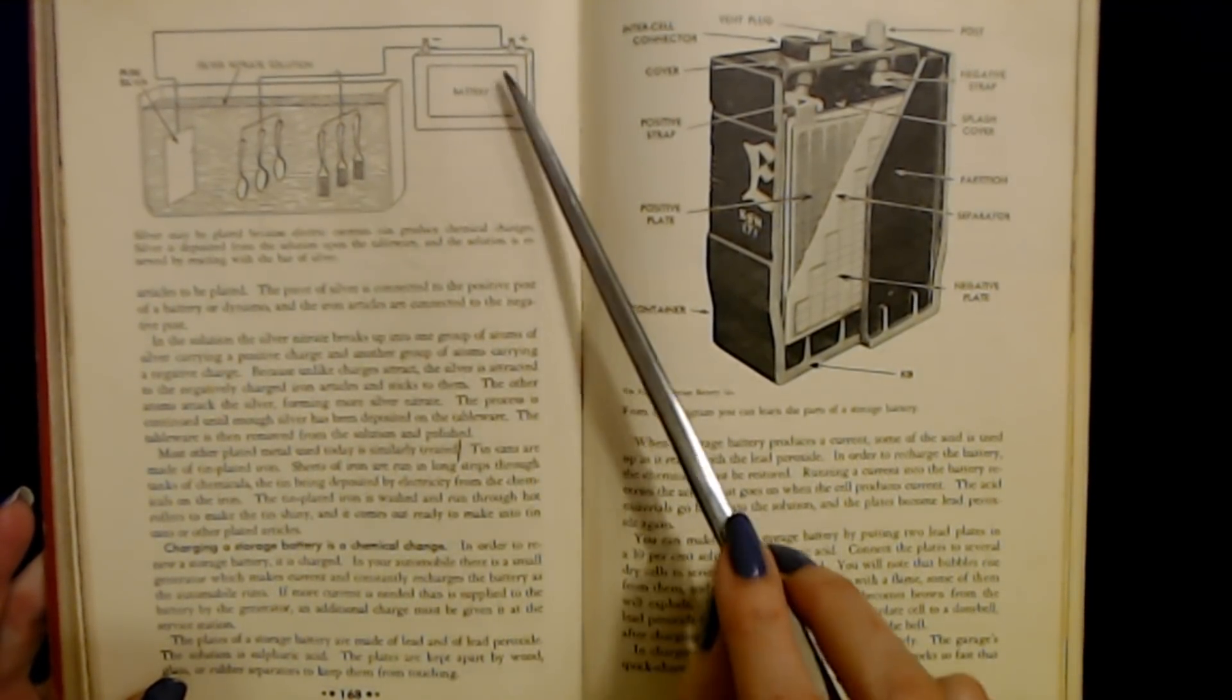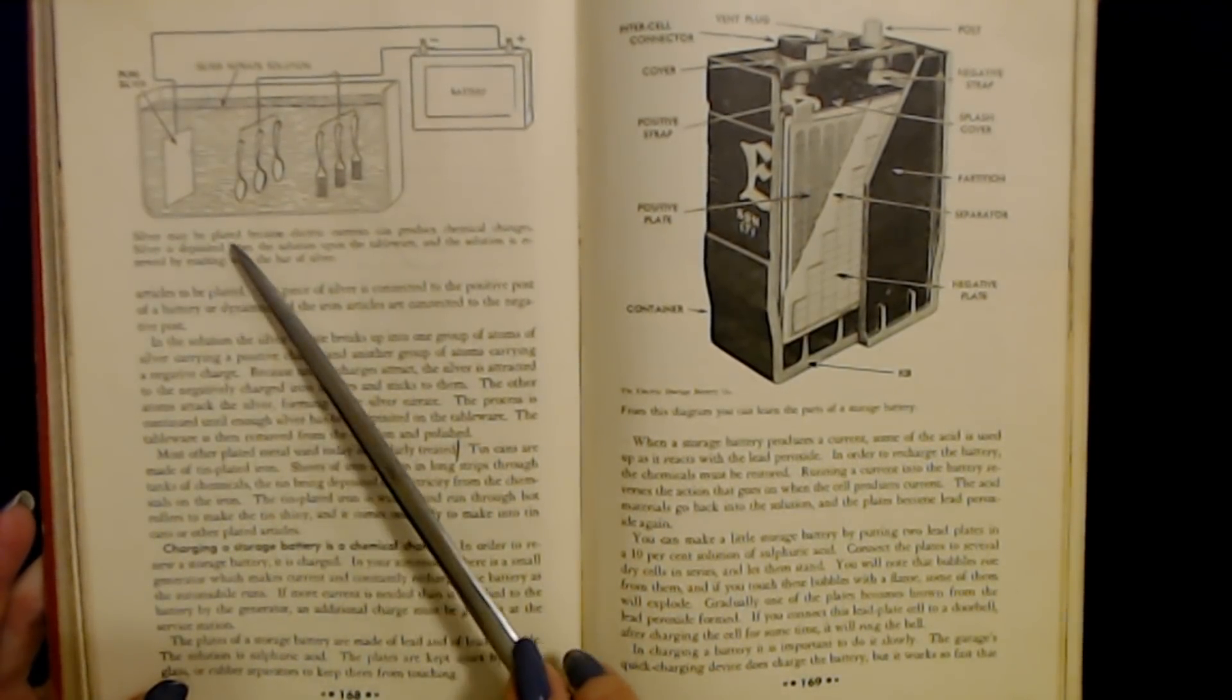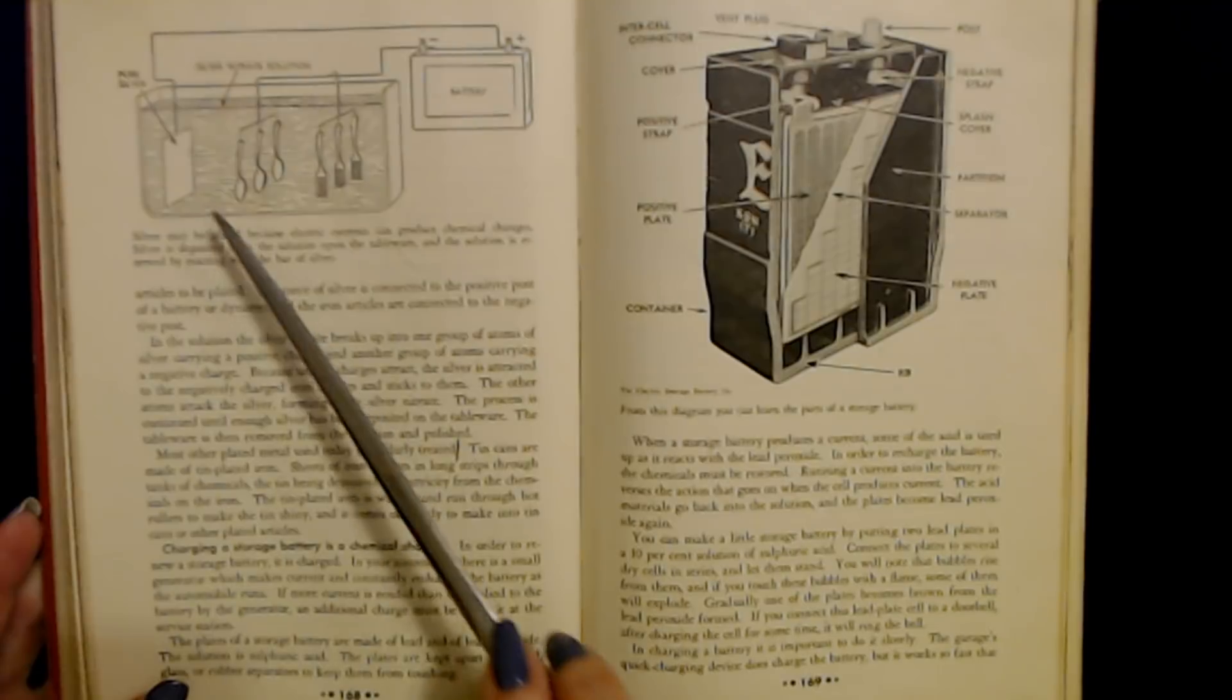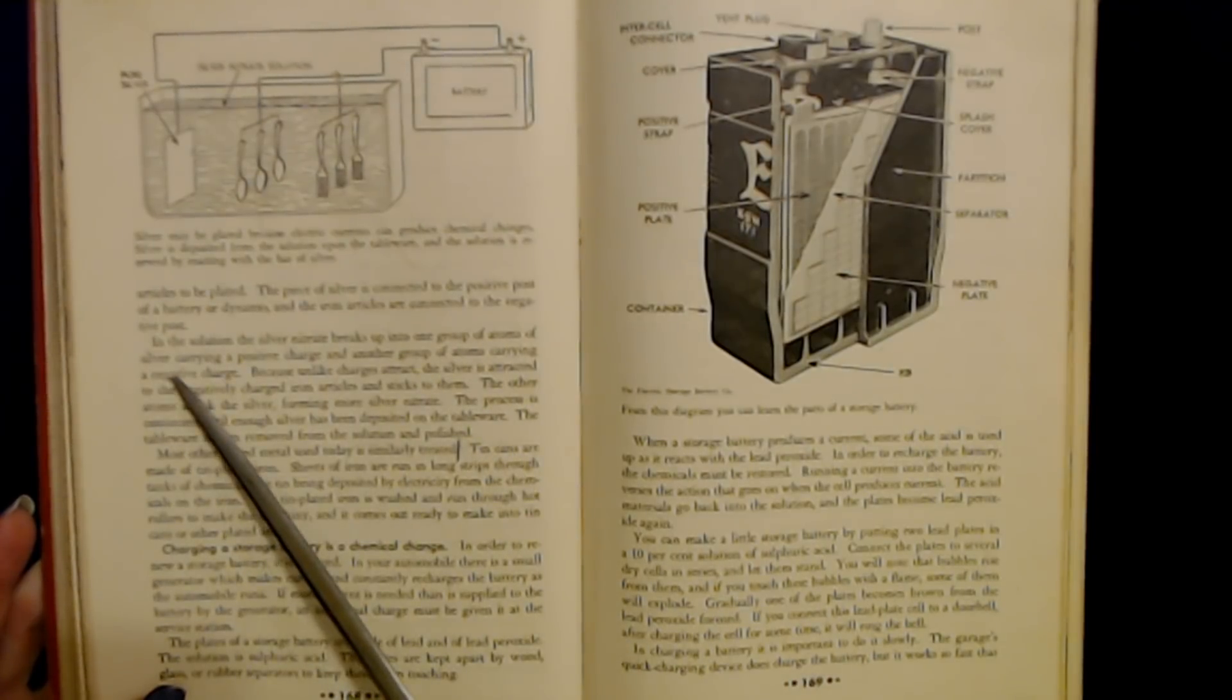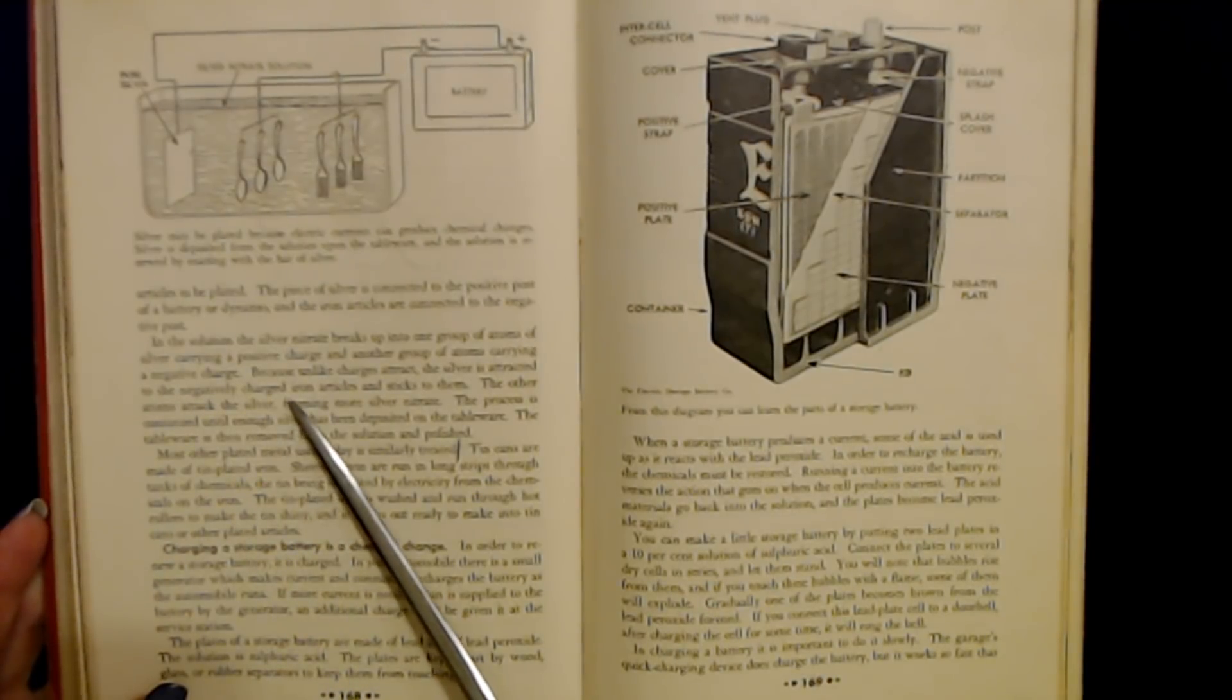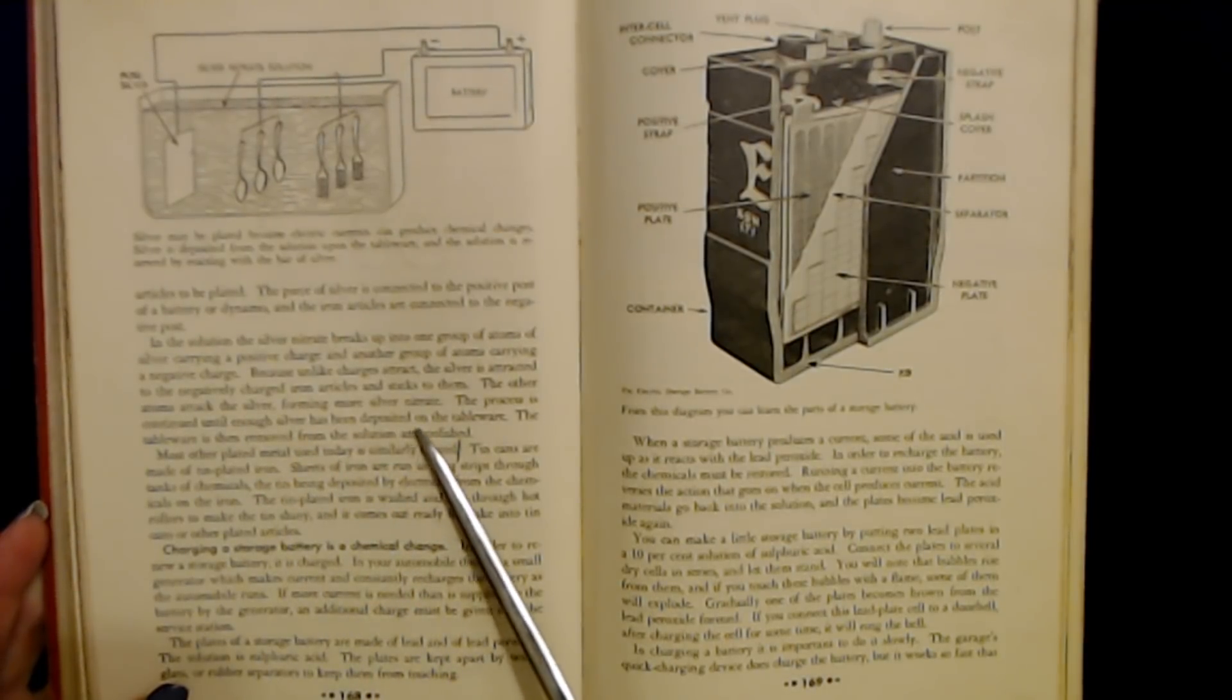Silver may be plated because electric currents can produce chemical changes. Silver is deposited from the solution upon the tableware and the solution is renewed by reacting with the bar of silver. In the solution, the silver nitrate breaks up into one group of atoms of silver carrying a positive charge and another group of atoms carrying a negative charge. Because unlike charges attract, the silver is attracted to the negatively charged iron articles and sticks to them. The other atoms attack the silver, forming more silver nitrate. The process is continued until enough silver has been deposited on the tableware. The tableware is then removed from the solution and polished.